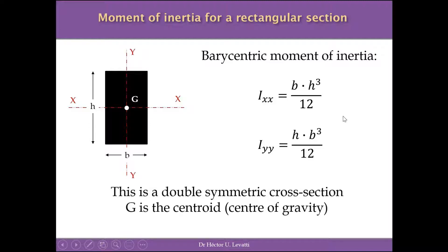Another important point is that this rectangular cross-section is doubly symmetric — meaning it is symmetric about both axis X and axis Y simultaneously. This will be an advantage when we deal with the moment of inertia for I-sections, rectangular hollow sections, and circular hollow sections.